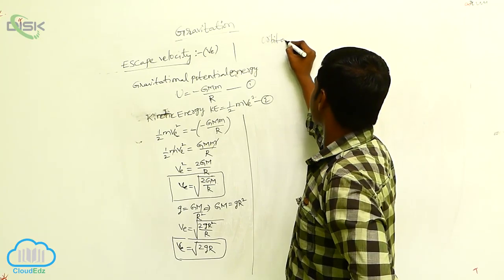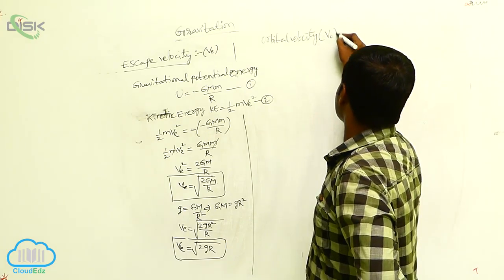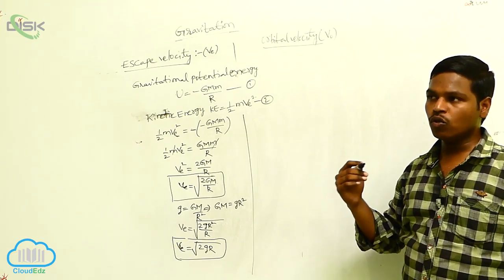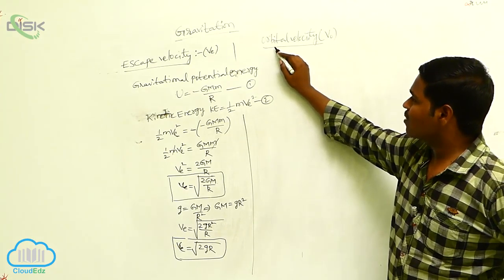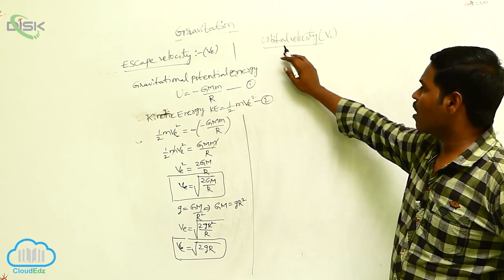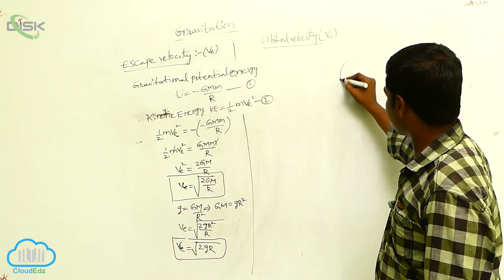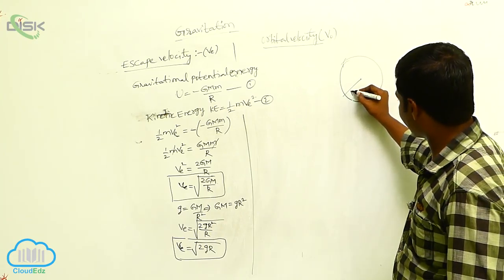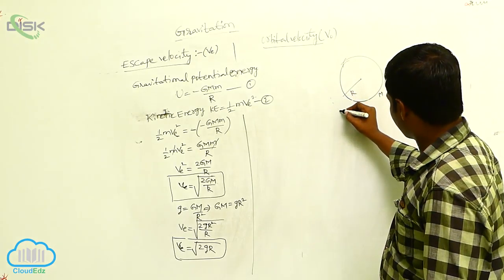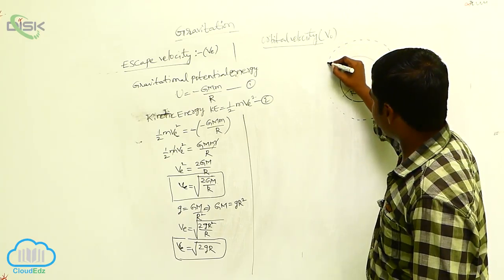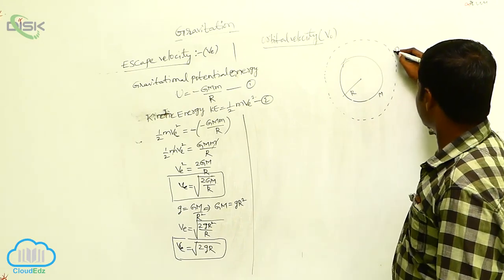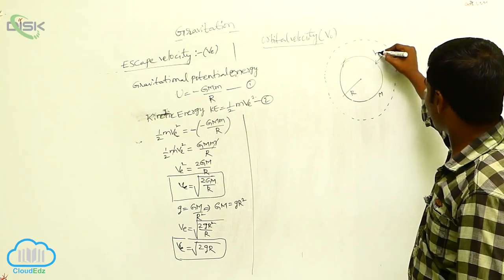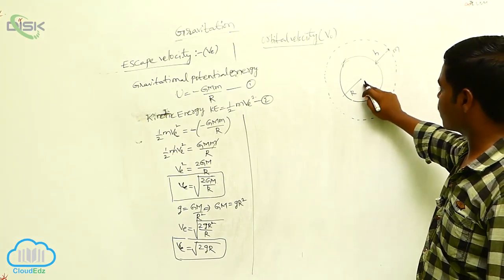Now, orbital velocity. Orbital velocity is denoted with V naught. Orbital velocity means the velocity required for an object to revolve round a planet. We consider capital M as the mass of the planet and capital R as the radius of the planet. Small m is the mass of an object revolving round this planet at a height h above the surface.